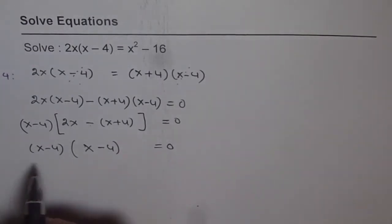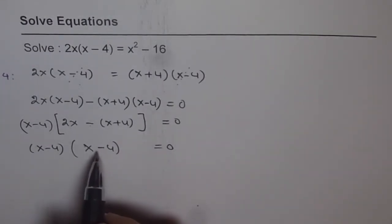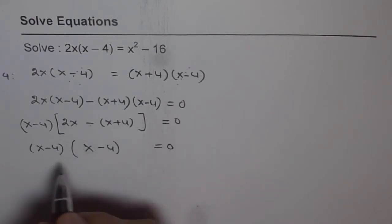So we get x minus 4 as our solution here. So that gives possibility of only one solution, which is x equals 4. Now you should equate both to 0. If you equate x minus 4 to 0,